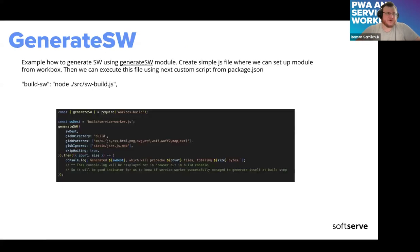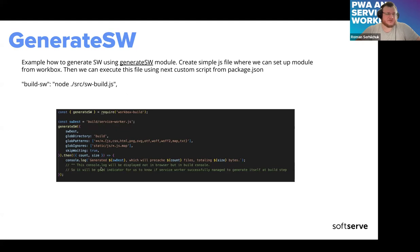generateSW is the simpler way to generate your service worker — pretty straightforward. You import this method from the Workbox library and add basic configuration: where to put your generated service worker, what folder to use, from where to cache your files, the glob pattern of files to cache, ignored patterns for files to skip, and additional configuration such as telling your service worker to activate itself as soon as the install step is over. After generation you can add log activity, and then launch your JavaScript file — and you'll have your service worker.